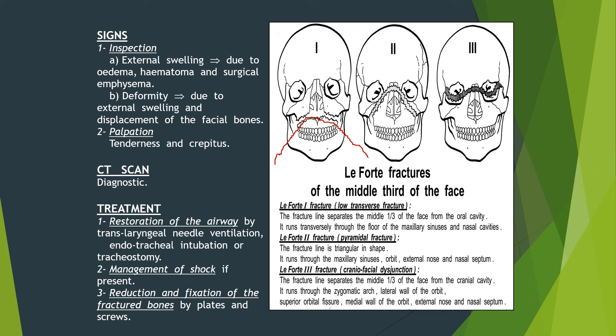In Le Fort II, the fracture line is triangular in shape and runs through the maxillary sinus, orbit, external nose, and nasal septum. In Le Fort III, the fracture separates the middle third of the face from the cranial cavity and runs through the zygomatic arch, lateral wall of the orbit, superior orbital fissure, medial wall of the orbit, external nose, and nasal septum.